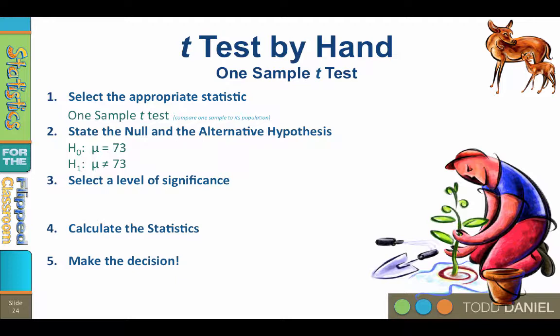Step three: select a level of significance. For most research, alpha equals 0.05. Technically you could set alpha equal to any value, but for scientific research you really have two choices: alpha equals 0.05 and alpha equals 0.01. Unless the problem says otherwise, assume alpha equals 0.05 two-tailed test. The degrees of freedom always equals n minus 1, where n is the number of participants in your sample. With nine men, our degrees of freedom are 8.